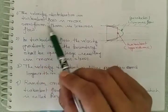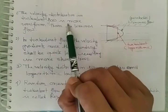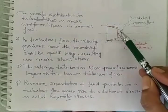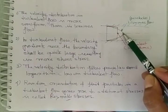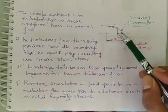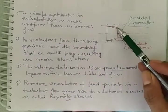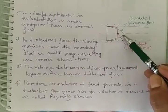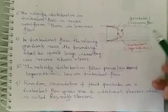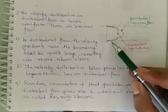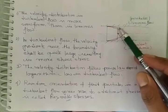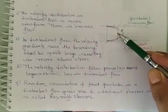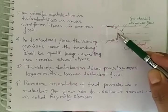So velocity distribution in the turbulent flow is more uniform than the laminar flow. So if you observe this red and green velocity profile, you can easily understand. As compared to laminar flow, turbulent flow is more uniform near the walls also and near the center line.